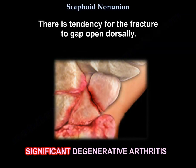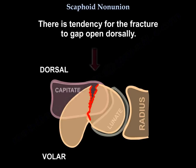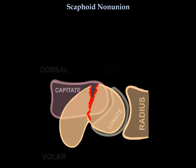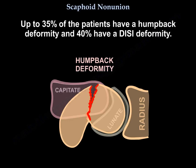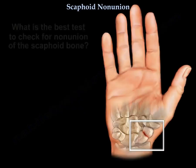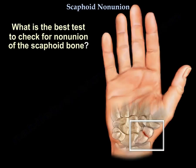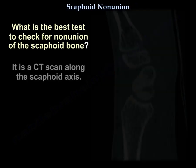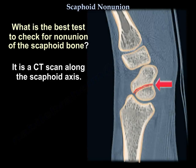There is a tendency for the fracture to gap open dorsally. Up to 35% of patients have a humpback deformity and 40% have a DISI deformity. The best test to check for non-union of the scaphoid bone is a CT scan along the scaphoid axis.